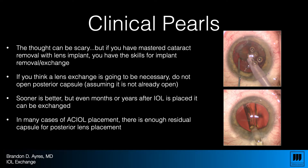Sooner is definitely better, but there is no such thing as too late for an IOL exchange. Within the first six months an implant exchange is relatively straightforward, but I've taken IOLs out of the capsular bag years after they've been placed. Sometimes if you're exchanging an anterior chamber lens, there's often enough residual capsule to hold a sulcus lens — the surgeon just didn't recognize that during the primary surgery, perhaps due to corneal edema or other issues.